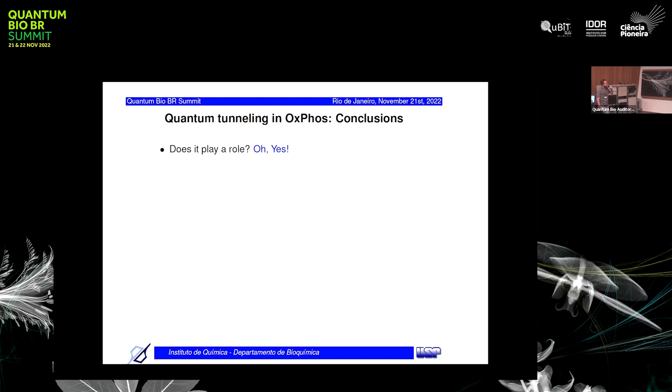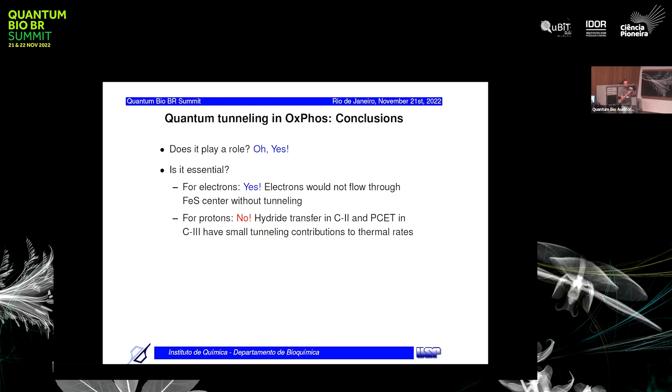So conclusions: Does quantum tunneling play a role in oxidative phosphorylation? Yes, it's there. Is it essential for electrons? Yes, the electron has to tunnel from one iron center to the other. Otherwise, there won't be any electron transfer. For the protons? No, it's not essential. Both hydride transfer in complex two and the proton-coupled electron transfer in complex three have small tunneling contributions to their thermal rates. So they could be working without any tunneling. It's not essential.